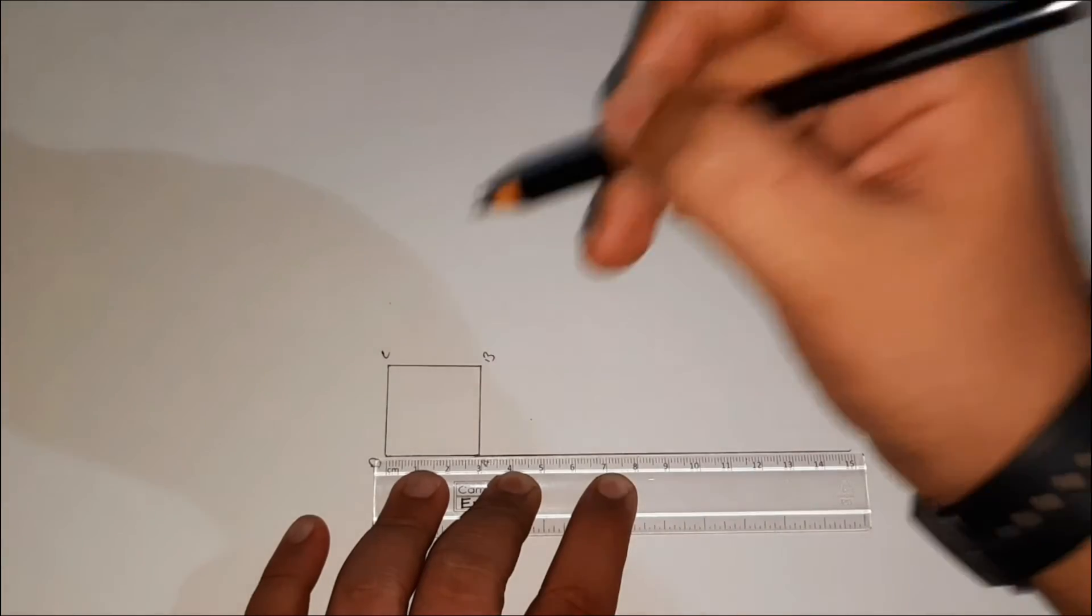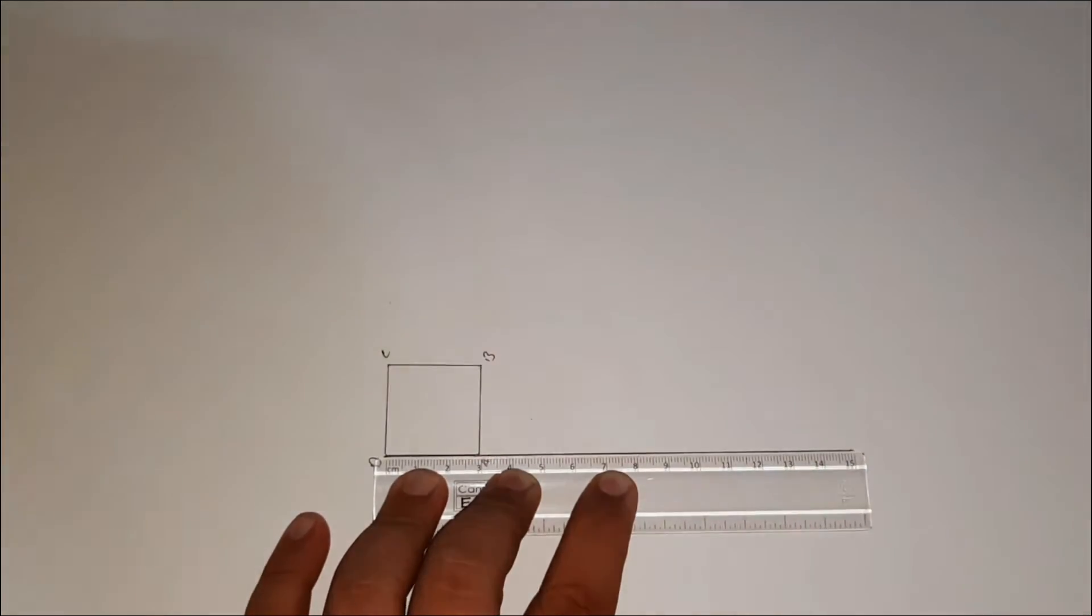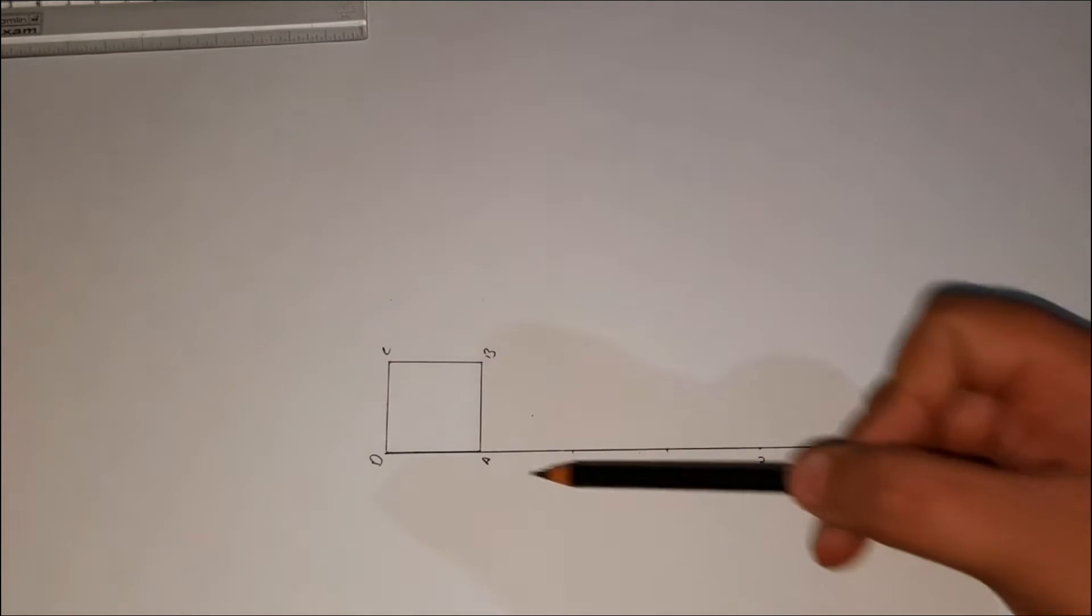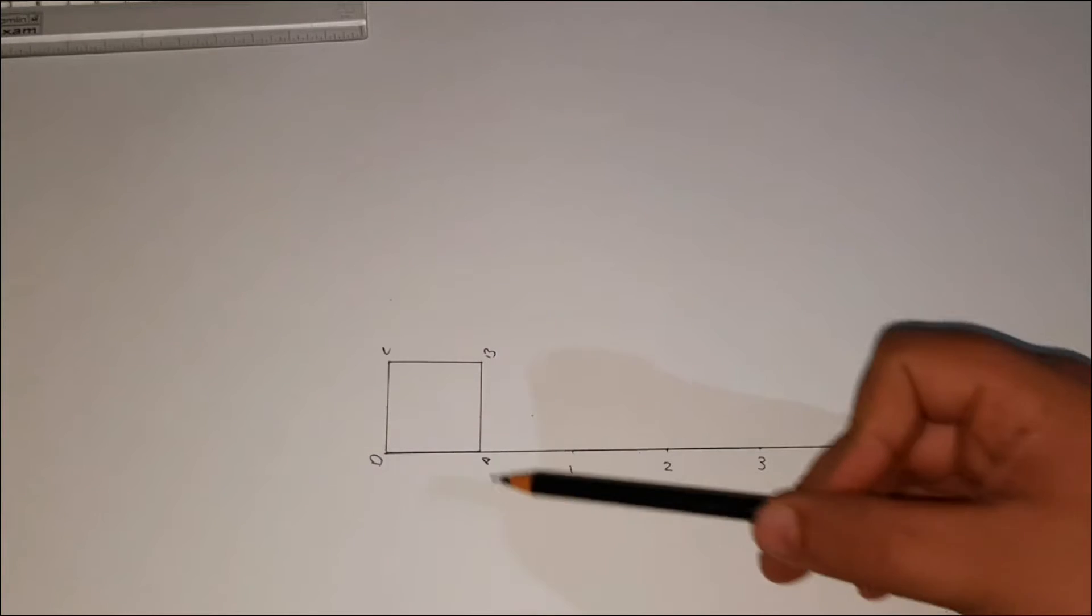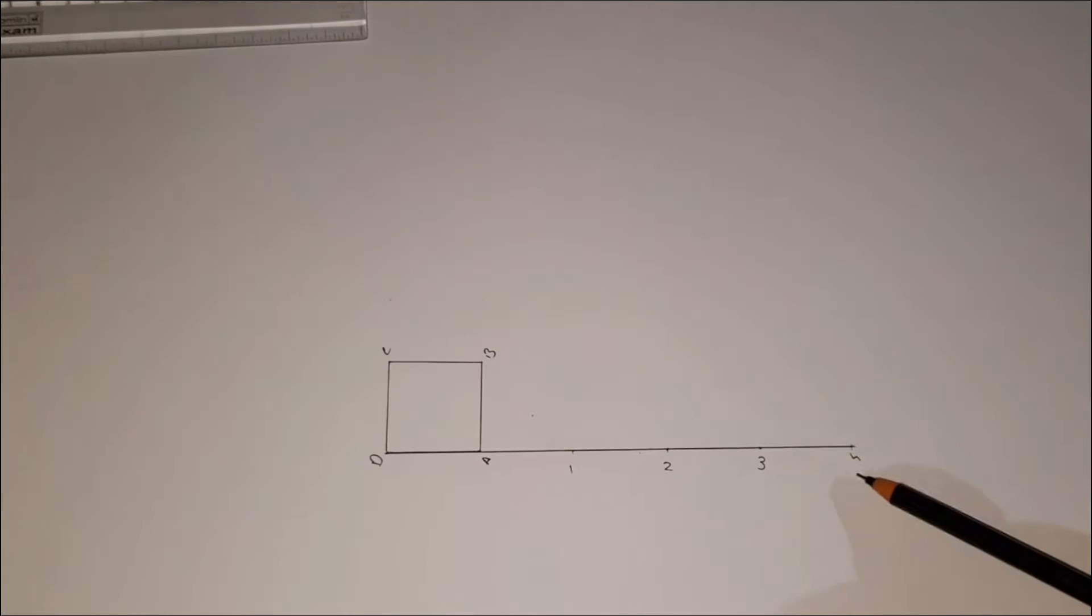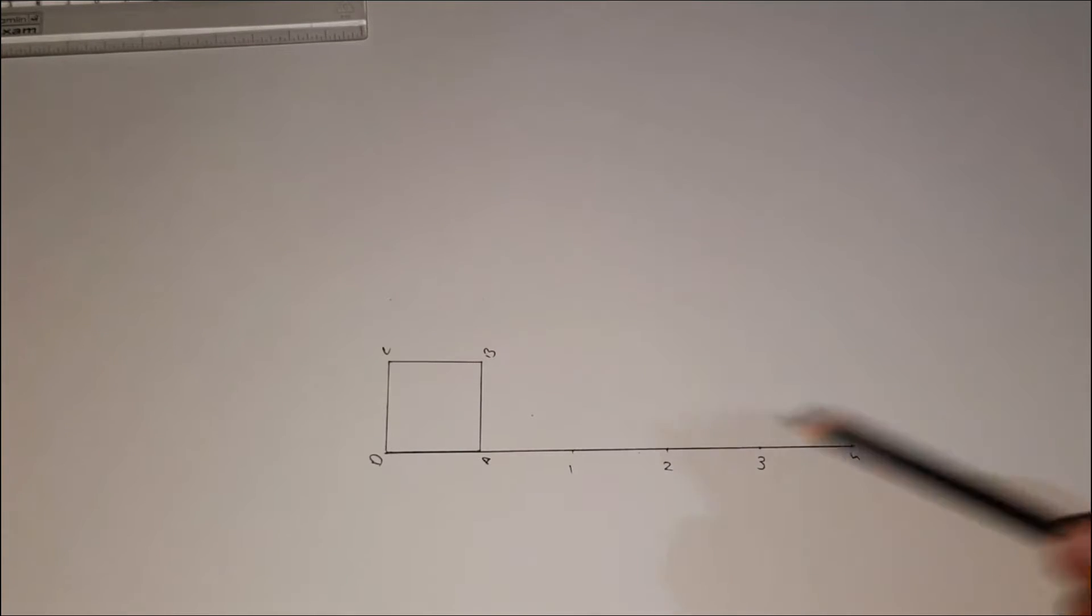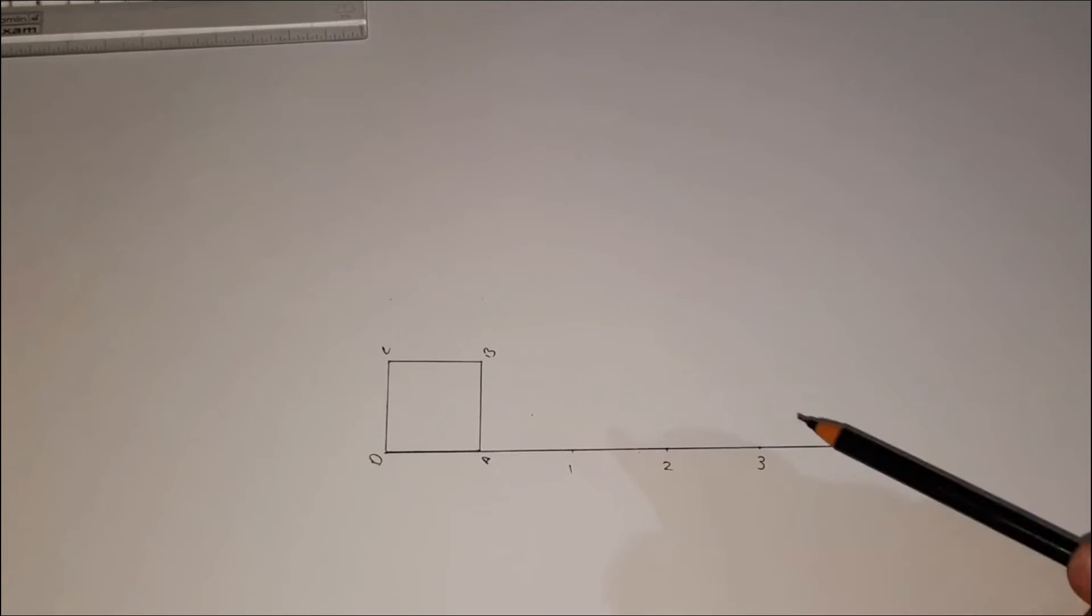Now we will extend the line AD. Here I have taken 4 points. Distance between A and 1 is 3 cm and distance between A and 4 is 12 cm. All these points are equidistant: 1 and 2 is 3 cm, 2 and 3 is 3 cm, 3 and 4 is also 3 cm.